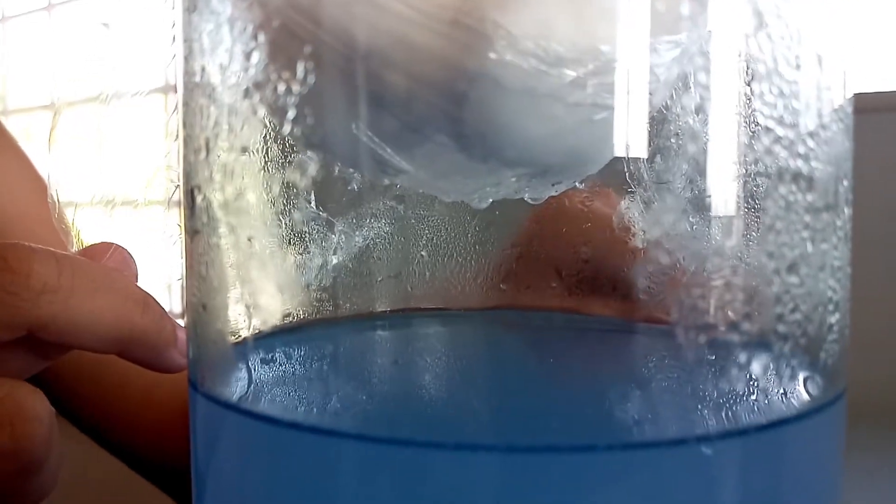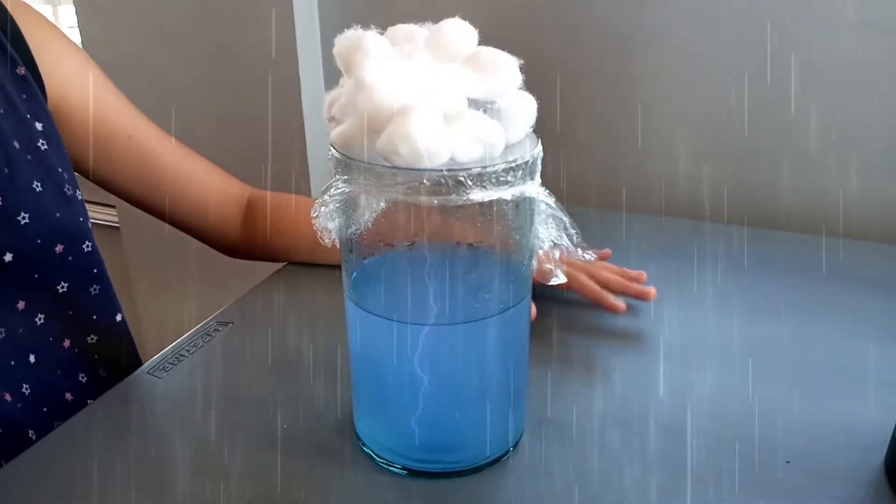In this activity, we observed that rain is formed through the process of evaporation and condensation. When hot air rises and is met by cold air, clouds will be formed and rain will be produced.